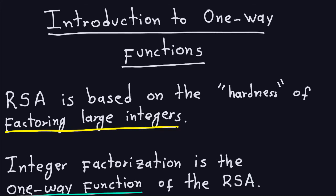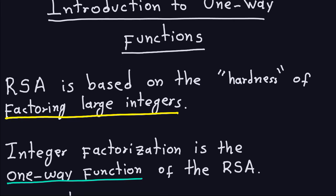Hello and welcome. We'll start this sequence of videos with an introduction to one-way functions. One-way functions are an important concept in cryptography. In particular, some of the encryption methods we'll see later, and the one we just saw — RSA — is based on the idea of a one-way function.